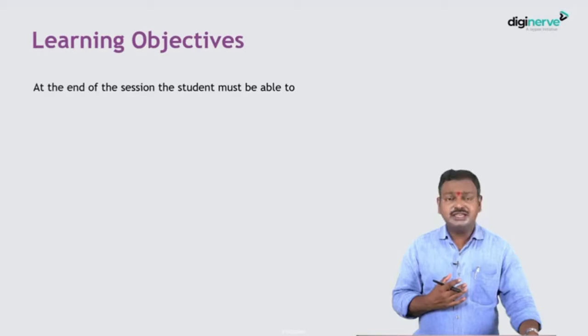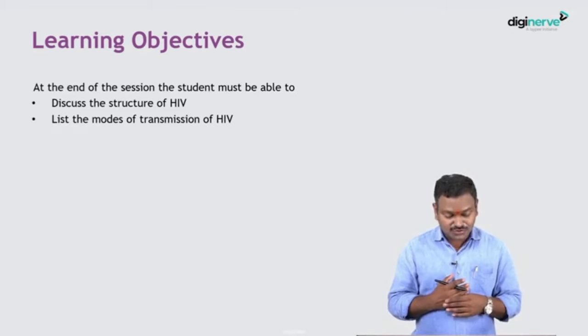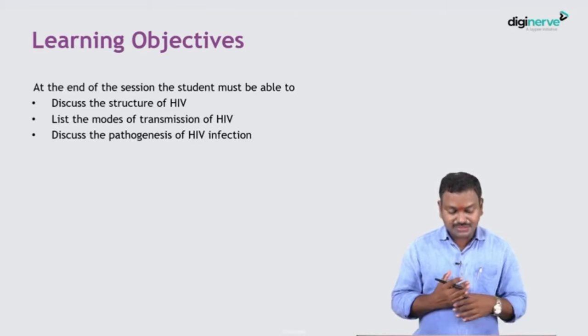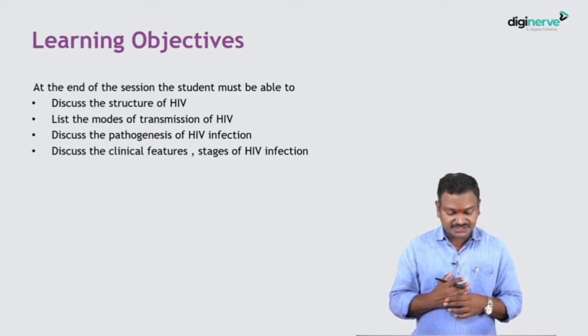Hello students. In today's session we'll be discussing an important infectious disease that's on the rise and of paramount importance for clinical practice. This is also very important for your exams, both theory and practicals. We are going to discuss HIV/AIDS. The learning objectives are: describe the structure of HIV, list the modes of transmission, discuss the pathogenesis, and discuss the clinical features and staging of HIV infection.